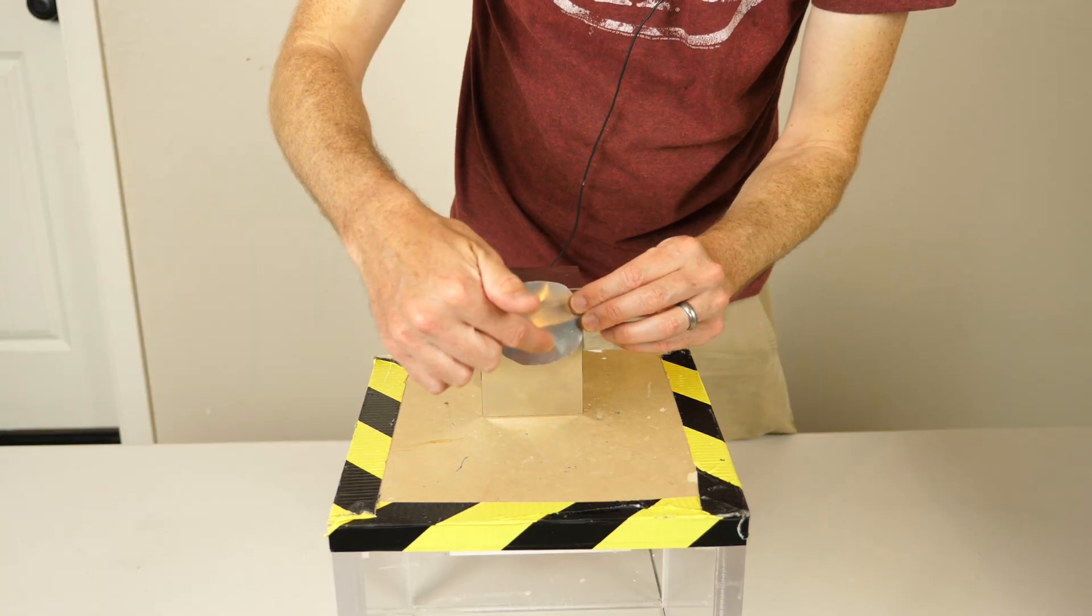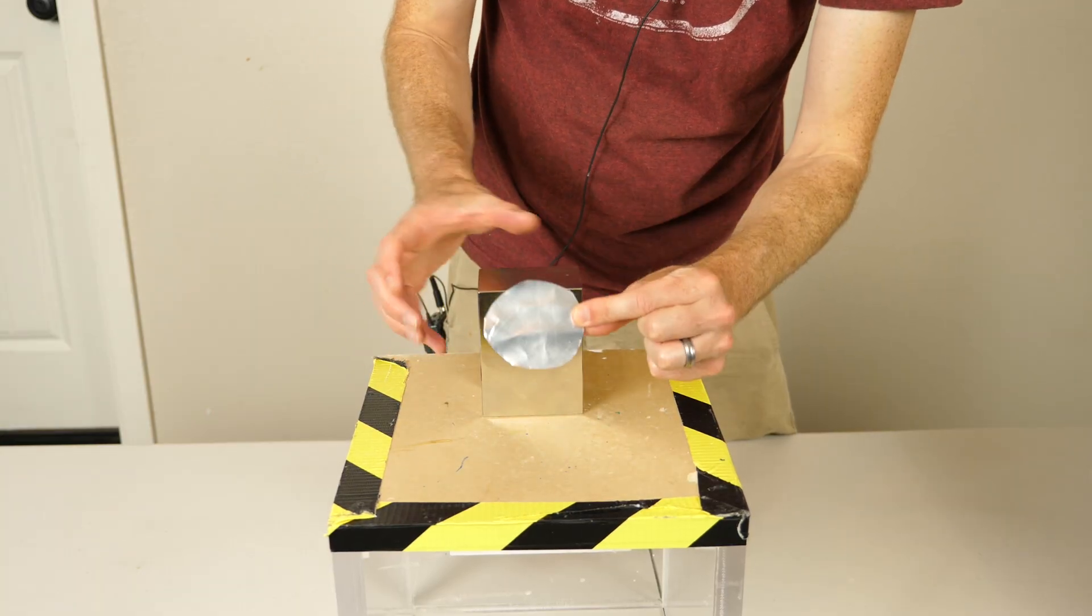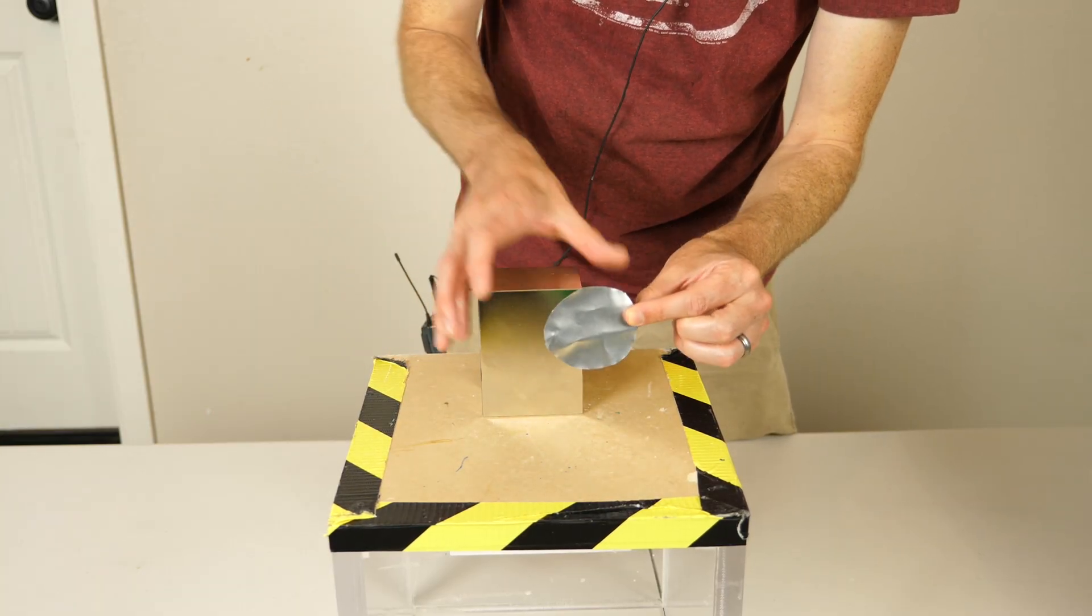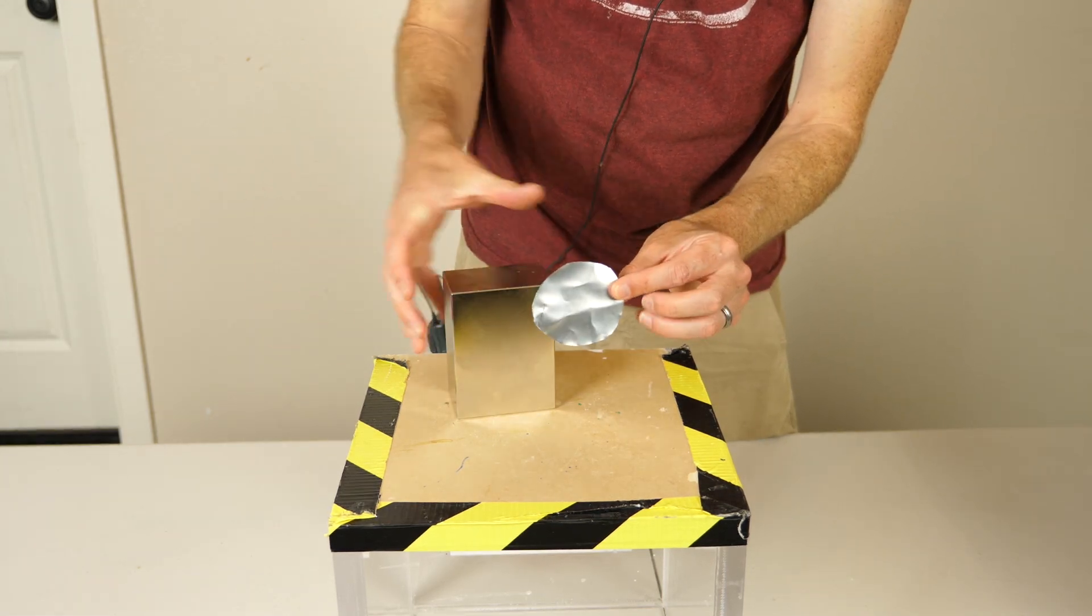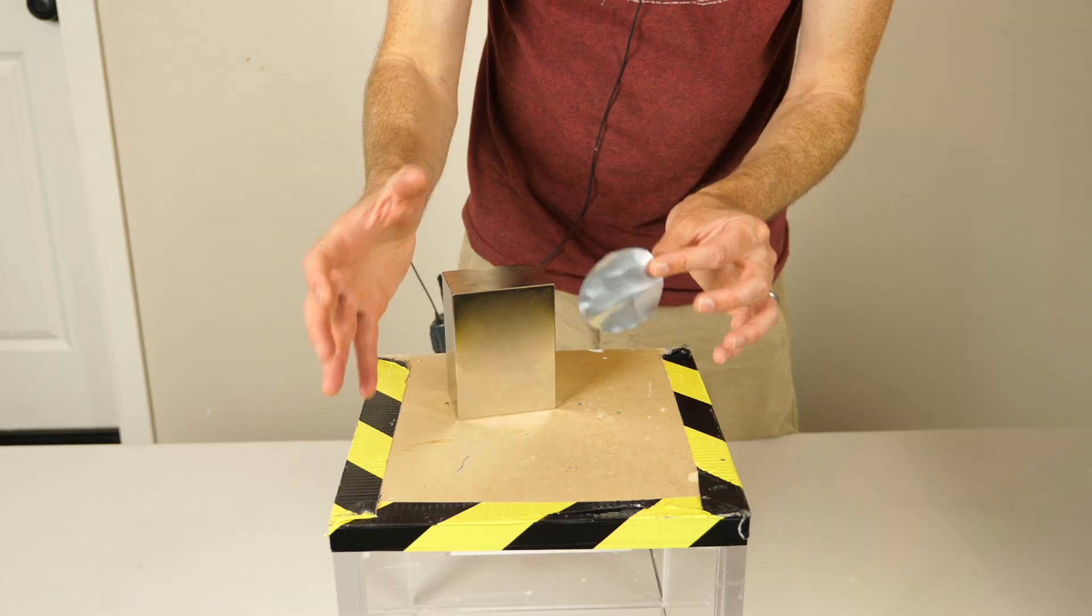And so basically it creates small little electromagnets in this piece of metal that oppose the force of whatever it's doing. So whatever way you try to move it, it creates a force that opposes that. And this is called Lenz's Law.